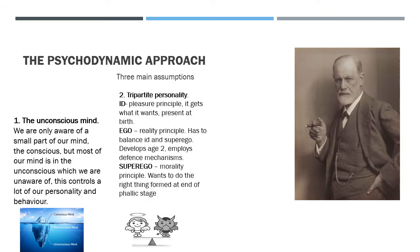The second assumption is the tripartite personality, which includes three parts. The first is the id — the pleasure principle, present at birth, wanting to get what it wants. The second is the ego, which contains the reality principle; its job is to balance the id and the superego, developing around age two. The ego also employs defence mechanisms such as sublimation and repression. The third is the superego — the morality principle — which always wants to follow the rules, like an angel, and develops towards the end of the phallic stage.